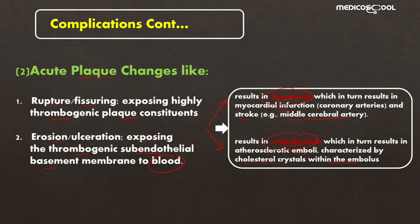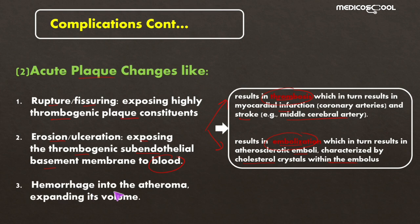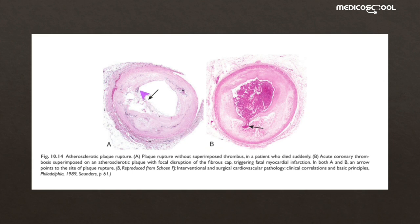Rupture or erosion can also result in embolization, characterized by cholesterol crystals within the embolus. The third acute plaque change is hemorrhage into the atheroma, which can expand the volume of the atherosclerotic plaque and further increase its complications. Images show the ulcerated atherosclerotic plaque, the thrombus formed when the ulcer exposes thrombogenic material, and occlusion of the artery by the thrombus.